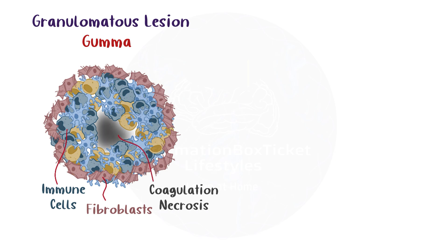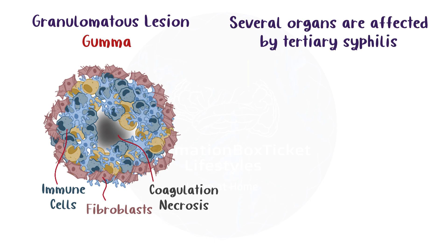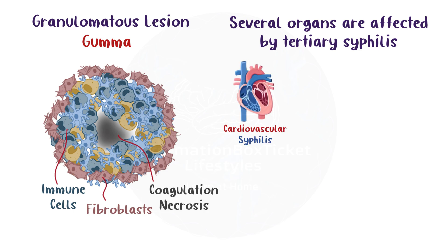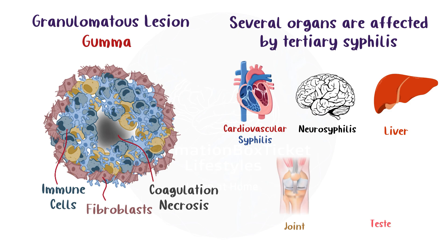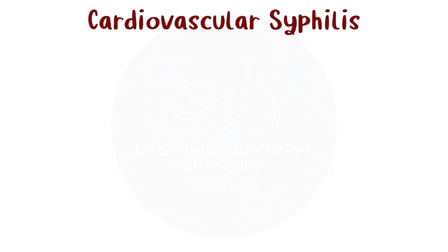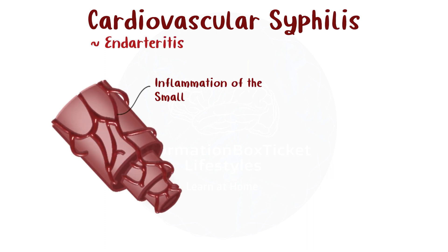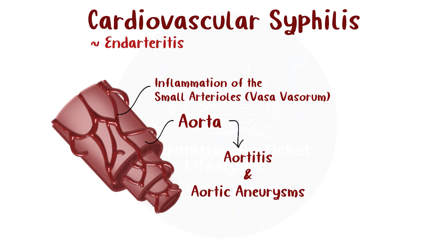Coagulation necrosis can occur when there is insufficient oxygen in the gumma's central tissue. Several organs are affected by tertiary syphilis, including the heart and blood vessels (cardiovascular syphilis), the brain and spinal cord (neurosyphilis), the liver, joints, and testes. In cardiovascular syphilis, there's endarteritis — inflammation of the small arterioles called vasa vasorum, which supply blood to major arteries like the aorta. As a consequence, the aorta becomes inflamed, or aortitis, and this can lead to the development of aortic aneurysms.